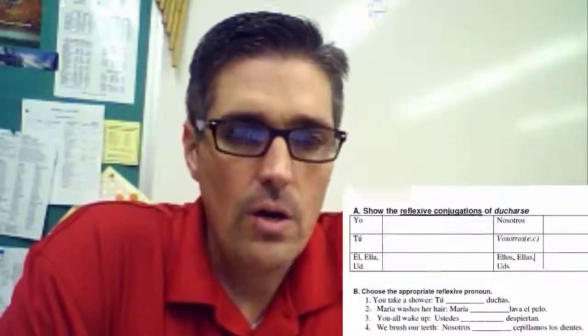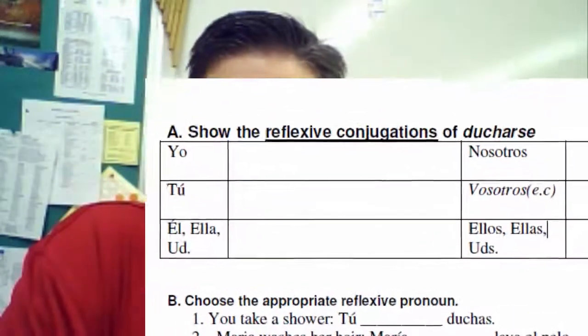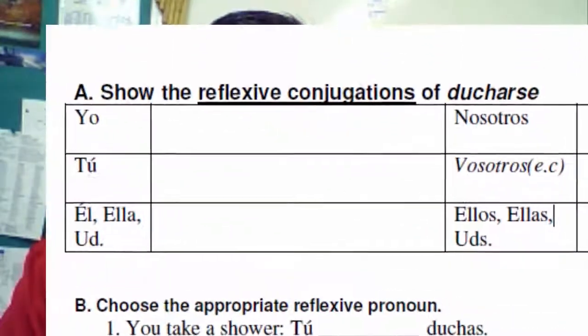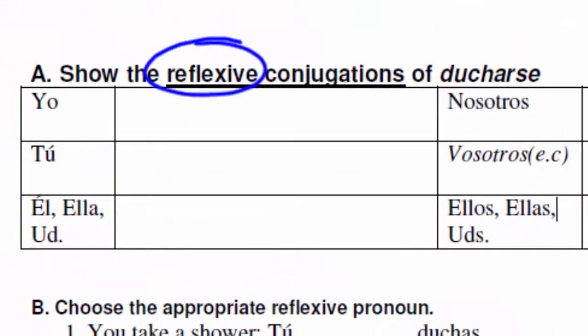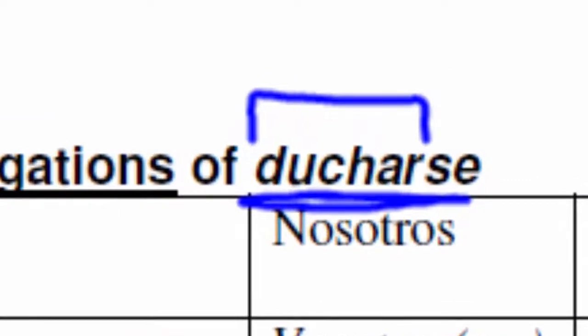Without rambling on too much, let's get right to the lesson and practice some of these verbs. Okay, here we go. We've got the reflexive conjugations of ducharse. It's a reflexive verb. We see ducharse — there's our verb duchar and our reflexive pronoun se at the end. Now to conjugate that, let's first go to the yo form.